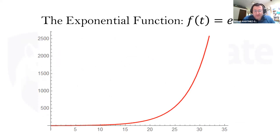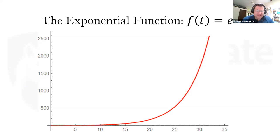Here is what the graph of the exponential function looks like. If we take the number E and multiply it by itself as many times as we want, we obtain this graph. E raised to the first power is just E; E squared is E times E; E cubed is E times E times E. Since E is between 2 and 3, closer to 3, we can see how quickly it grows. E squared is close to 9, E cubed close to 27. Multiplying E by itself around 30 times, we're hitting 2,500. This graph evolves very, very quickly.